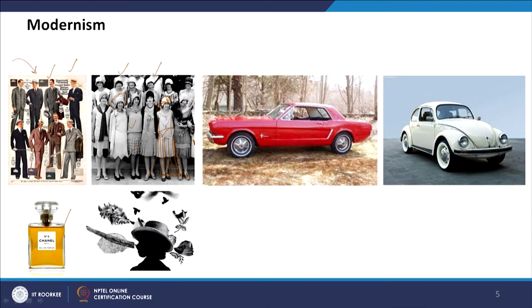In product design and bottle design, we see a clear design in the Chanel perfume bottle. In car design we see a pure geometric form blended with ergonomics and aerodynamics as required. One is more rectilinear and one has a lot of curvilinearity added. Now if we look at the time frame of modernism.